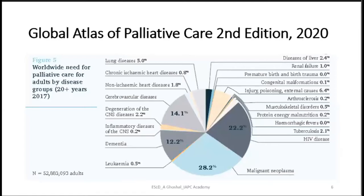The Global Atlas of Palliative Care (2020 publication) shows that liver disease accounts for about 2.4% of conditions requiring palliative care globally — nevertheless a significant burden. Importantly, hepatocellular malignancy, which falls under the malignancy category at around 28.2% of all cancers, also requires palliative skills. So both benign and malignant liver conditions call for palliative care skills in liver disease.